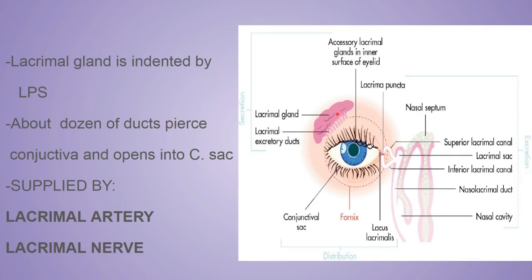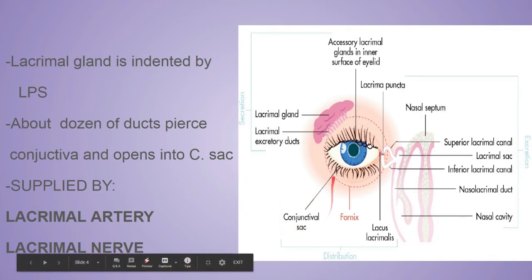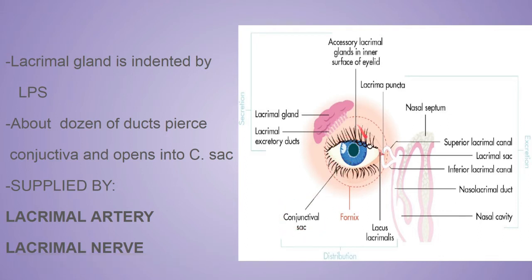About a dozen lacrimal ducts pierce the conjunctiva of the upper eyelid and open into the conjunctival sac near the superior fornix. These ducts pierce the conjunctiva of the eye, open into the superior conjunctival fornix, and drain into the conjunctival sac — which is the space between the conjunctiva and both eyelids.